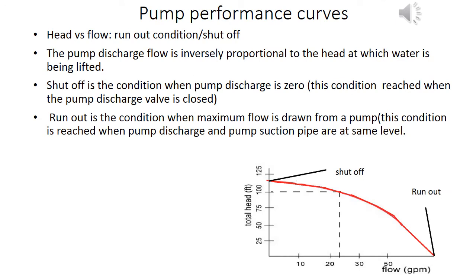The pump discharge flow is inversely proportional to the head at which water is being lifted. Shut off is the condition when pump discharge is zero; this condition is reached when the pump discharge valve is closed. Run out is the condition when maximum flow is drawn from a pump; this condition is reached when the pump discharge and suction pipes are at the same level.